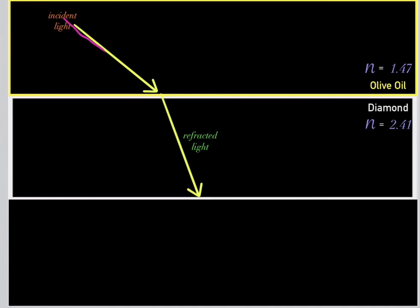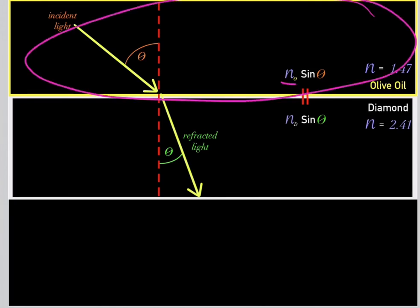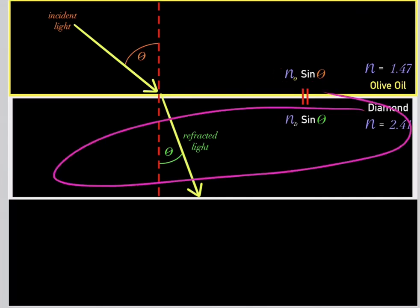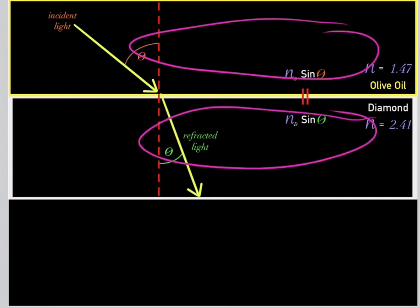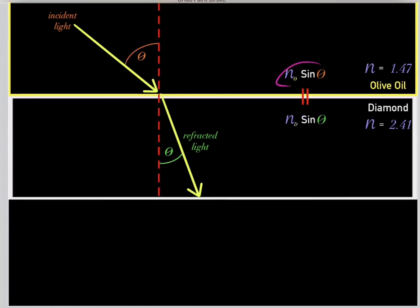Let's try one last example. Let's say we have a ray of light in olive oil that gets refracted into a nearby diamond. The index of refraction of olive oil multiplied by the sine of the angle the incident light makes with the normal perpendicular line will equal the index of refraction of the diamond multiplied by the sine of the angle the refracted light makes with the normal perpendicular line. Those two products will always equal each other, and the angle rays of light make with the normal perpendicular line is very important for Snell's law.